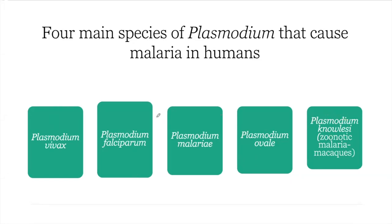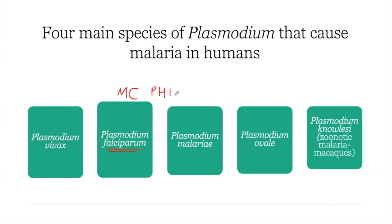Which of these four species is the most common worldwide causing malaria infection in humans? It is Plasmodium falciparum. And what is the most common cause of malaria in the Philippines? In the Philippines, it is also Plasmodium falciparum — this is the most common.